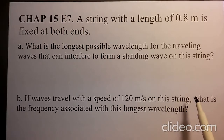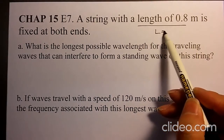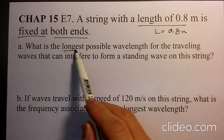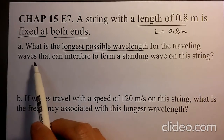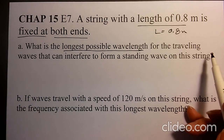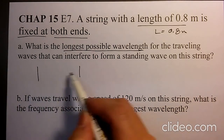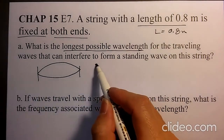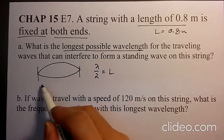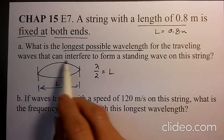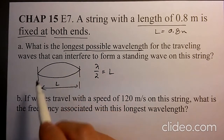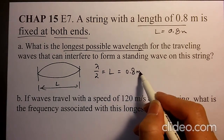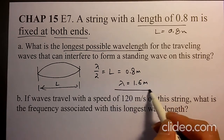Let's solve chapter 15 E7. A string with length L equal to 0.8 meters is fixed at both ends. What is the longest possible wavelength for the traveling waves that can interfere to form a standing wave on this string? The longest is half lambda, so lambda over 2 equals L. Half lambda plus another half lambda becomes your full wavelength.